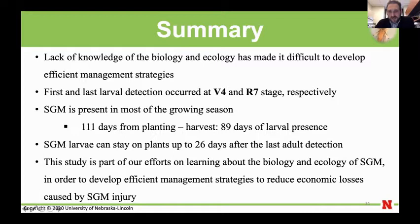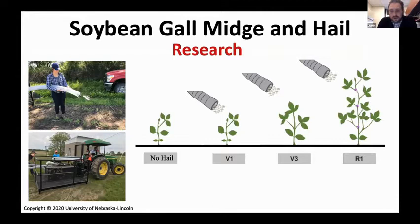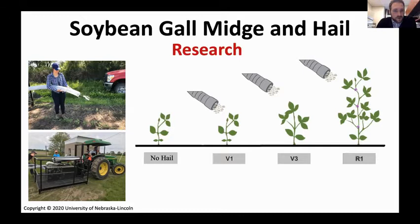If you have questions for Velma, type them in the chat. In 2019, Regina Stacky, a scholar from Brazil, joined us to do initial work on hail injury and soybean gall midge, because Tom had seen some relationship between plant injury and larval presence. We were applying simulated hail at three different stages of development — very early vegetative, in the midst of expected adult emergence, and later in the reproductive stages. The goal was to take random plant samples and see if injury points coincided with larval presence.